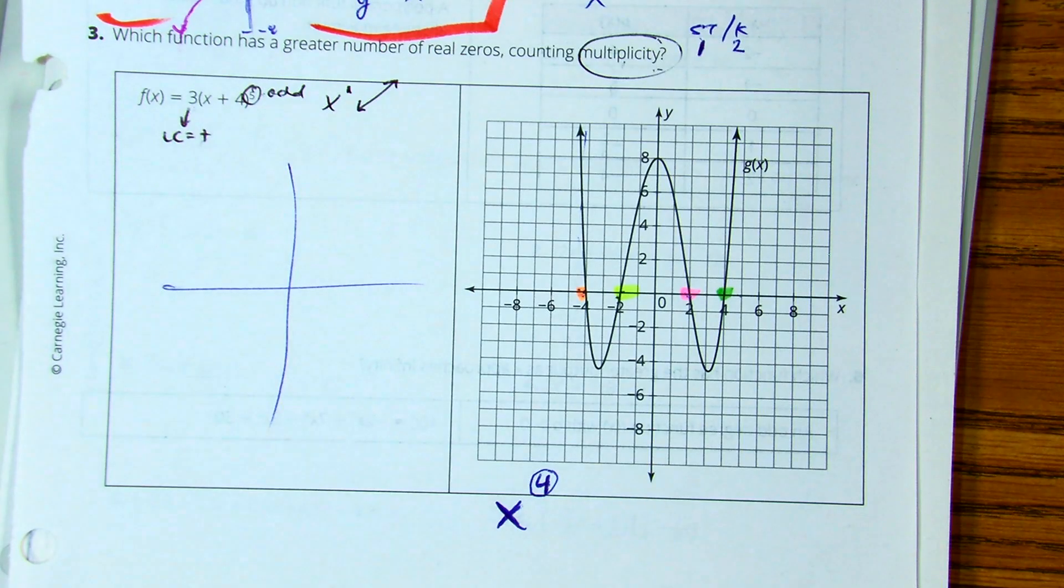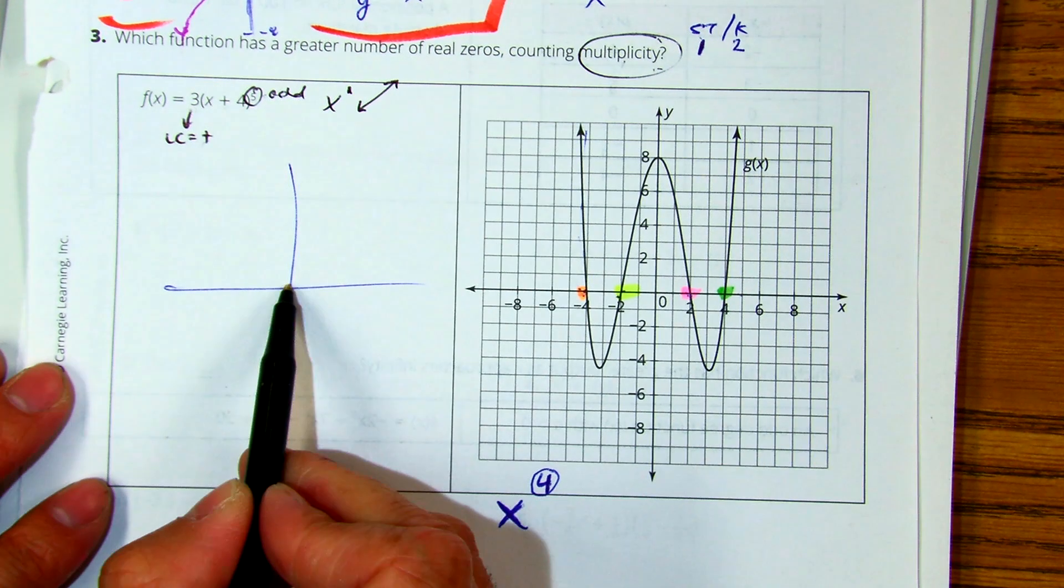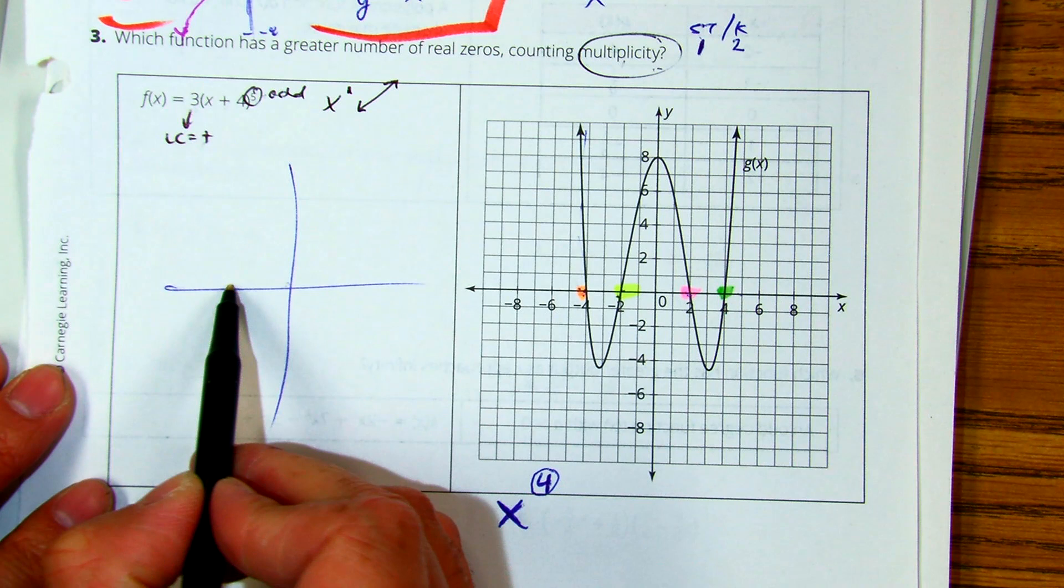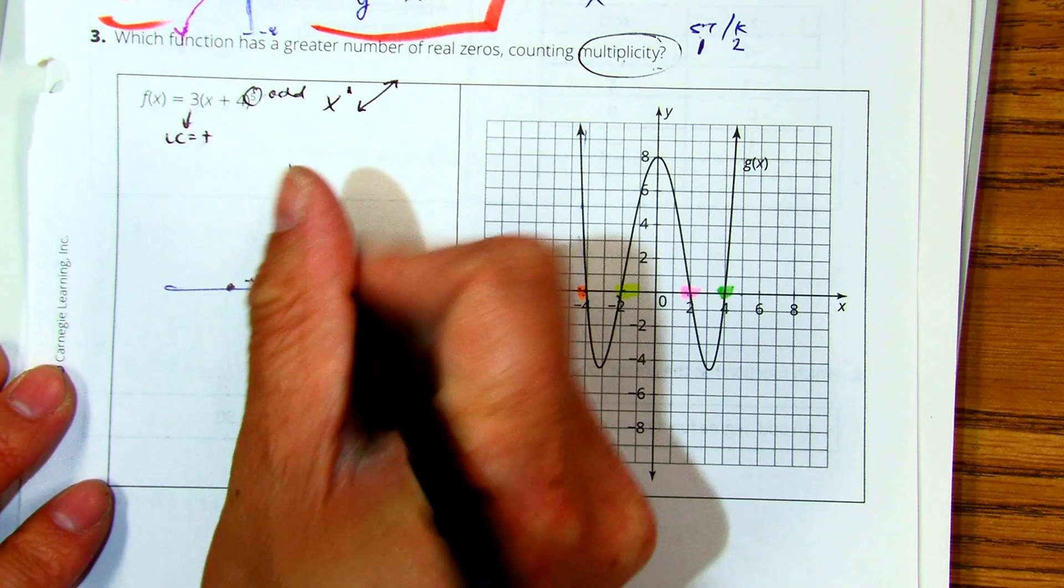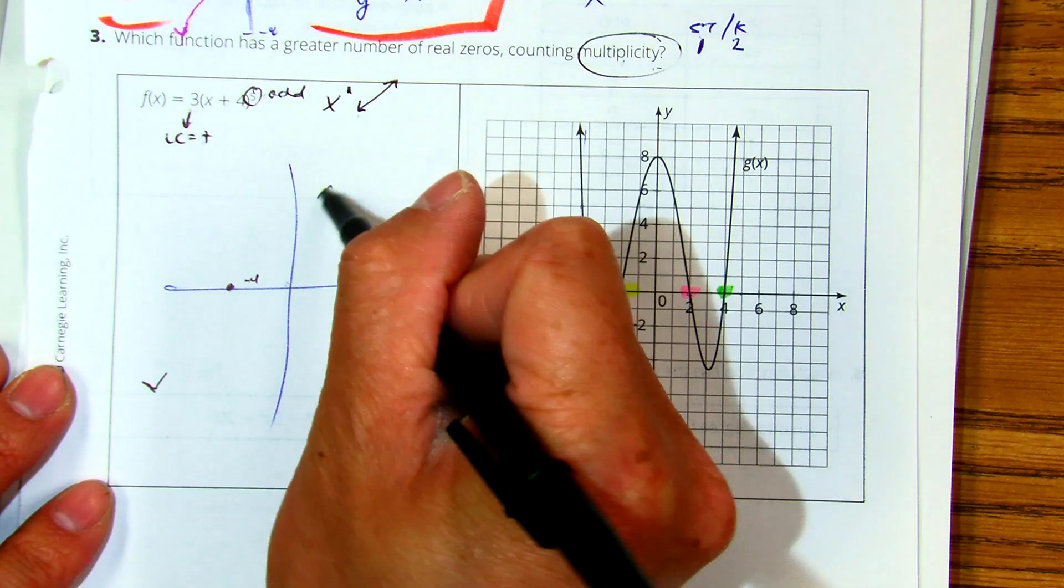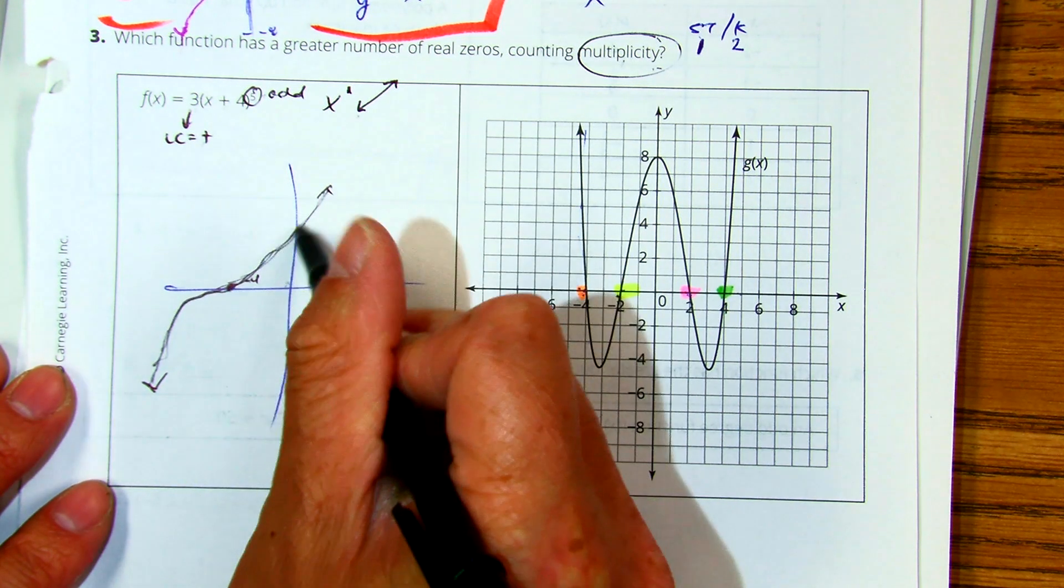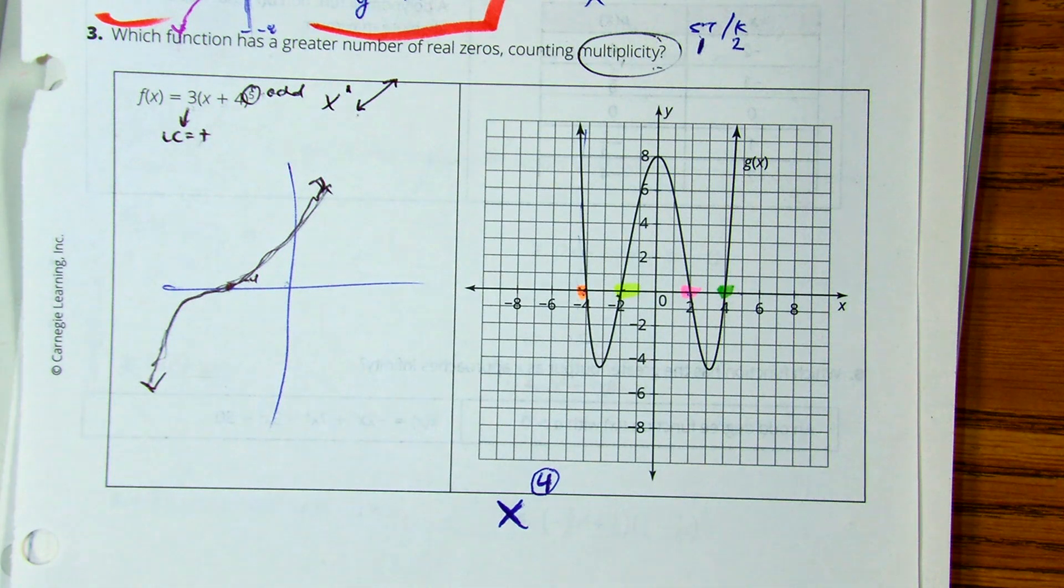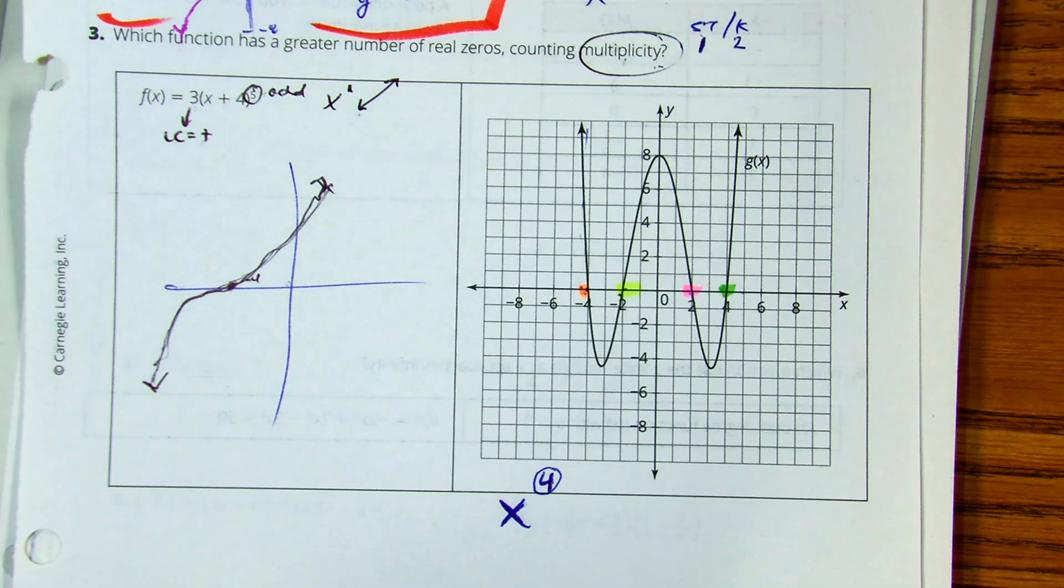and then it has a plus four so it means it's going to be transformed or translated to the left, add to x go west or left so there it is four, and then my arrows are going to start down and up and remember we kind of learned that it comes a little bit flatter at those spots.